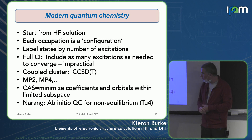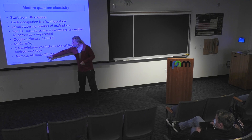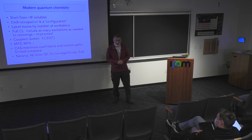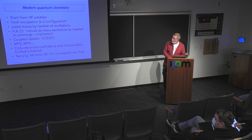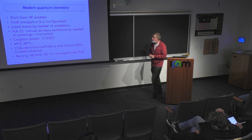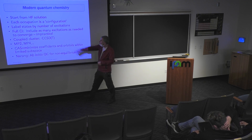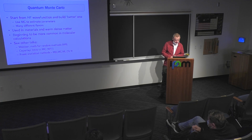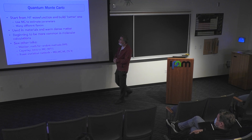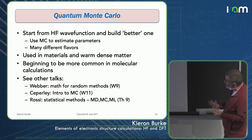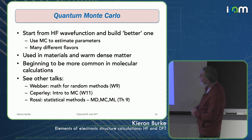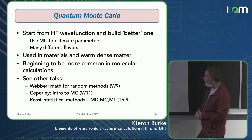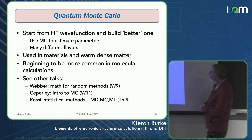Lots of the standard methods in quantum chemistry start from Hartree-Fock. CCSD(T) will normally get you to within one kilocalorie per mole for many standard systems. We're also going to hear a lot this week about quantum Monte Carlo. There, you almost always start from a Hartree-Fock wave function, build a more sophisticated one, and use Monte Carlo to estimate the parameters in that wave function — that's variational QMC.